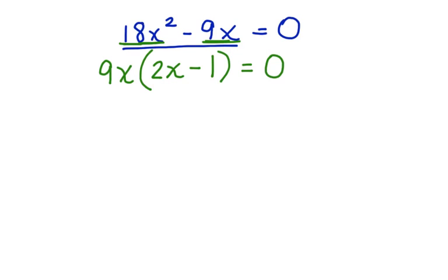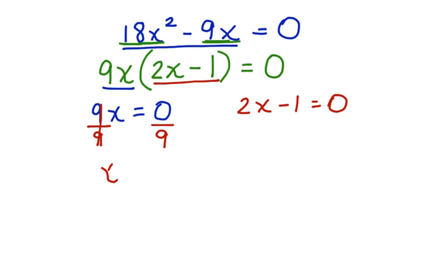Now we have two parts of the equation. We have 9x equals 0, and we have 2x minus 1 equals 0. Let's rewrite this as two equations. Let's start by writing 9x equals 0. And now let's write 2x minus 1 equals 0. We want to find the solution for x. We want to solve this polynomial equation for x. So let's start with 9x equals 0. We're going to divide both sides of this by 9 of the equation. These cancel. x is equal to 0. This is one possible solution for this polynomial equation.